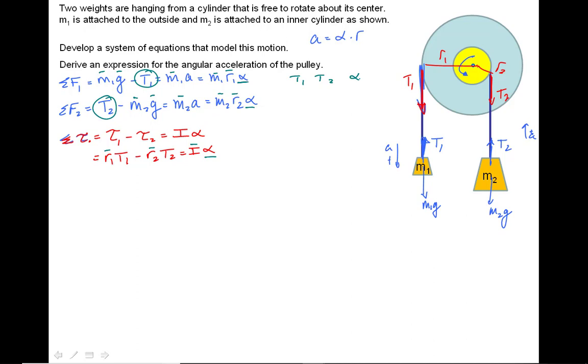So first thing I'm going to do is I'm going to take my two sum of force equations and solve them for the T's. So starting here, I'm going to say in the first one, I get T1 all by itself, I get T1 equals M1G minus M1R1 alpha, and T2 equals M2G plus M2R2 alpha.